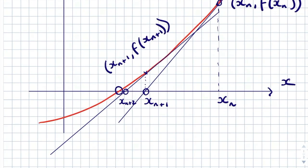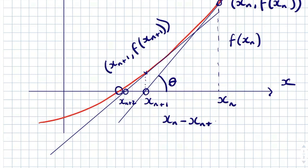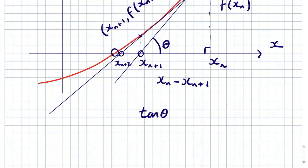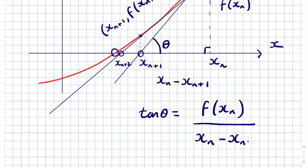Newton came up with a formula based on this idea. Looking at the first tangent, where we took x-value x_n and the tangent crossed the x-axis at x_{n+1}: if we draw the angle theta between the tangent and the x-axis, we want to work out the gradient of this tangent. The gradient is the change in y divided by change in x. So tan(theta) equals f(x_n) divided by (x_n minus x_{n+1}).